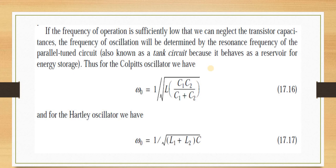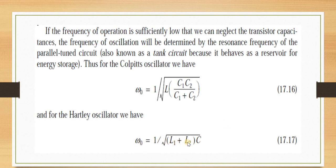Before that, we need to know the frequency of oscillation for both oscillators. If the frequency is sufficiently low, transistor capacitances can be neglected. The frequency of oscillation is determined by the resonance frequency of the parallel tuned tank circuit. For the Colpitts oscillator — two capacitors in series — the equivalent capacitance is C1·C2/(C1+C2), and the oscillation frequency ω₀ = 1/√(L·C).